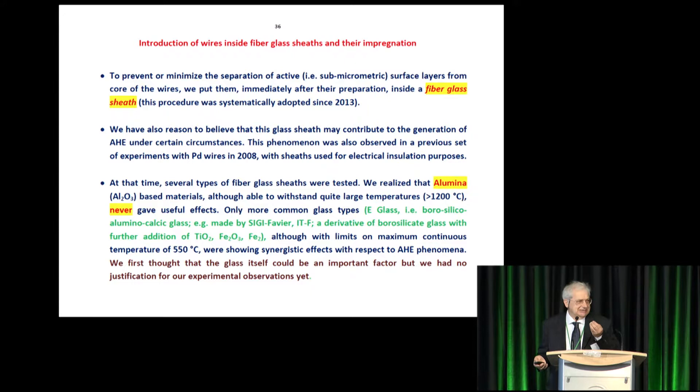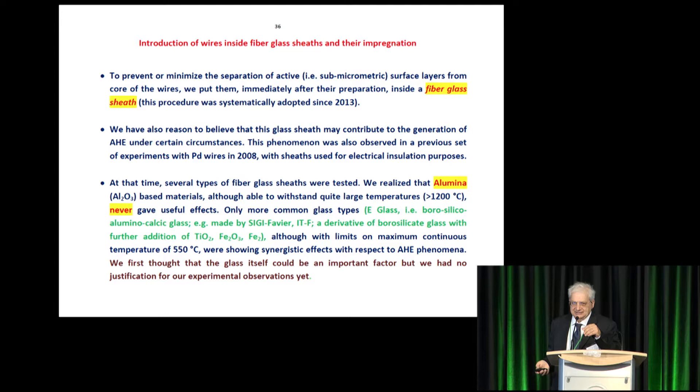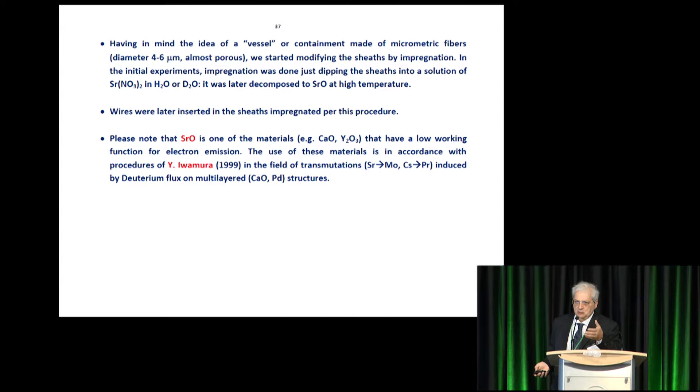But the point is, the active material, five minutes. So, the material lost the active section. So, we put inside the glass sheet. But the glass from itself is help for the reaction. Because borosilicate has the special ability to absorb atomic hydrogen. This was found from Nobel Prize, Langmuir, 1927. Just one page paper. And, moreover, we have several indications that electrons have a good effect. So, we had strontium oxide, also following the initial experiment of Eva Mura. So, low working function. And, it works.